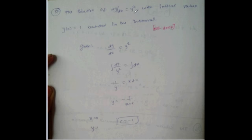Solution of dy/dx = y² with initial value y(0) = 1 (Mechanical 2017). Separating and integrating: -1/y = x + c, so y = -1/(x + c). Substituting x=0, y=1: c = -1. So y = -1/(x - 1) = 1/(1-x). Since division by zero is undefined, x ≠ 1, meaning x < 1 or x > 1.